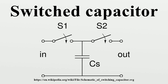Recall that the charge Q on a capacitor C with a voltage V between the plates is given by Q = CV, where V is the voltage across the capacitor. Therefore, when S1 is closed while S2 is open, the charge stored in capacitor CS is Q1 = CS·V1. When S2 is closed, some of that charge is transferred out of the capacitor, after which the charge remaining in CS is Q2 = CS·V2.